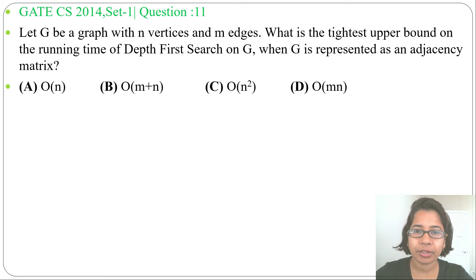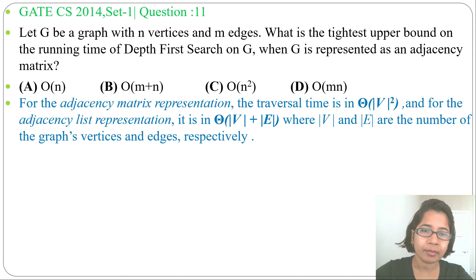I already discussed Depth First Search. For adjacency matrix representation, running time will be Theta of number of vertices square. And for adjacency list representation, running time will be Theta of number of vertices plus number of edges. Here, number of vertices given is n and number of edges given is m, and it is written adjacency matrix representation.